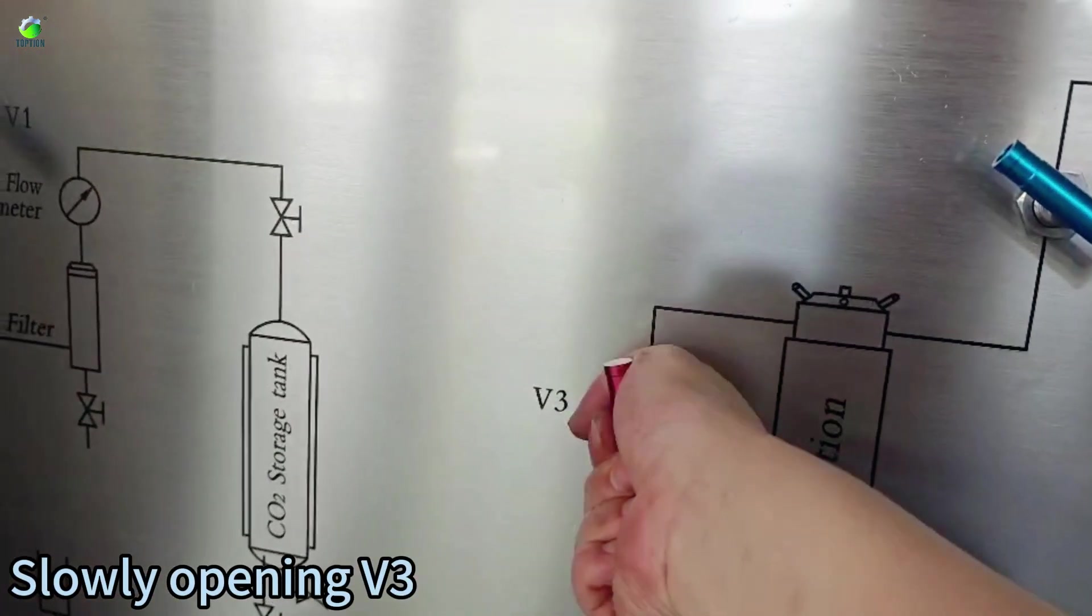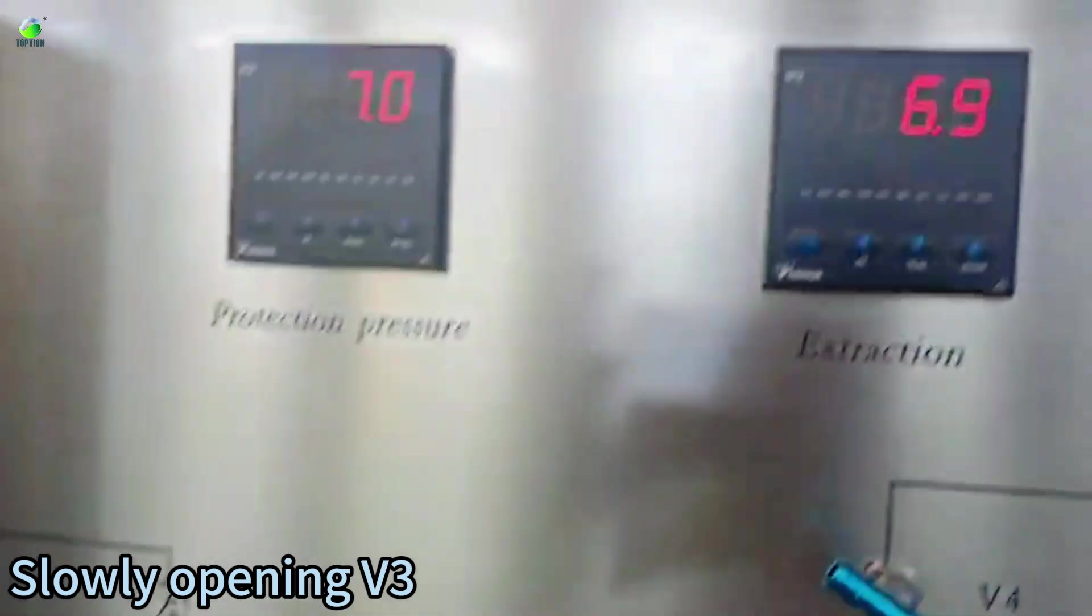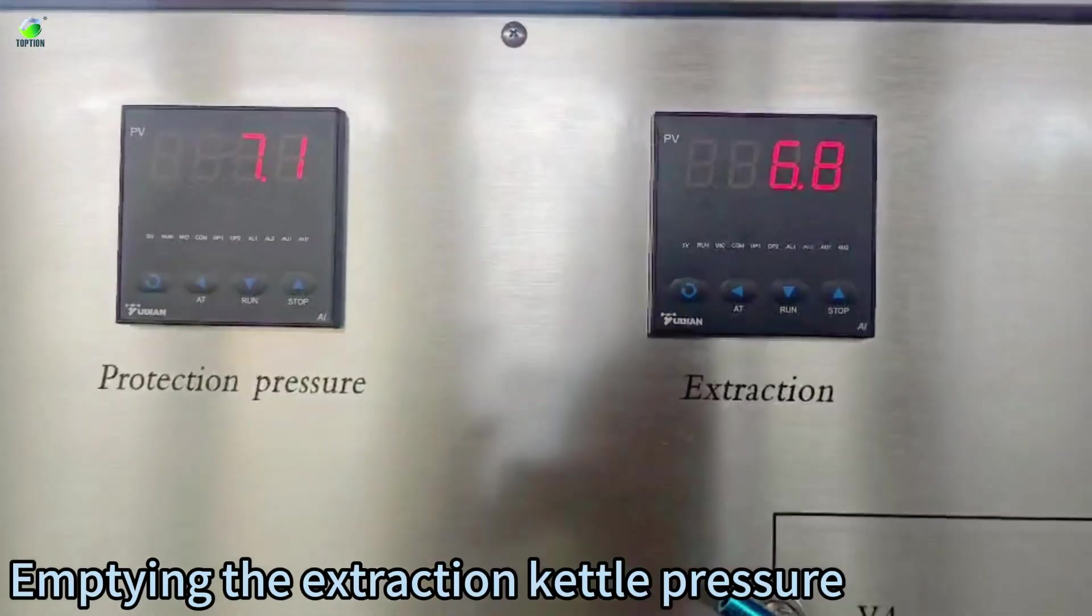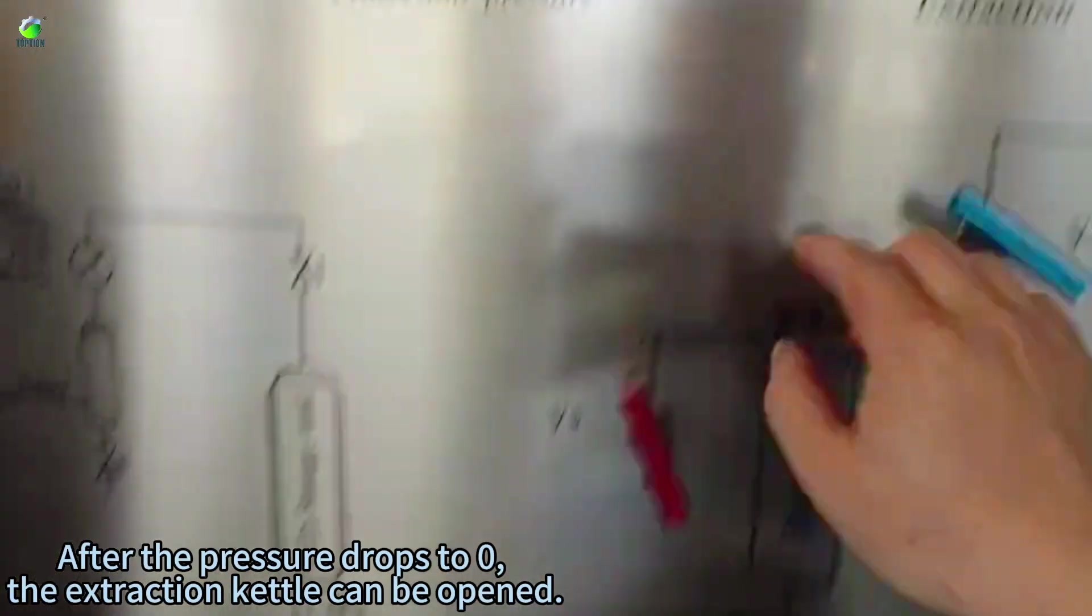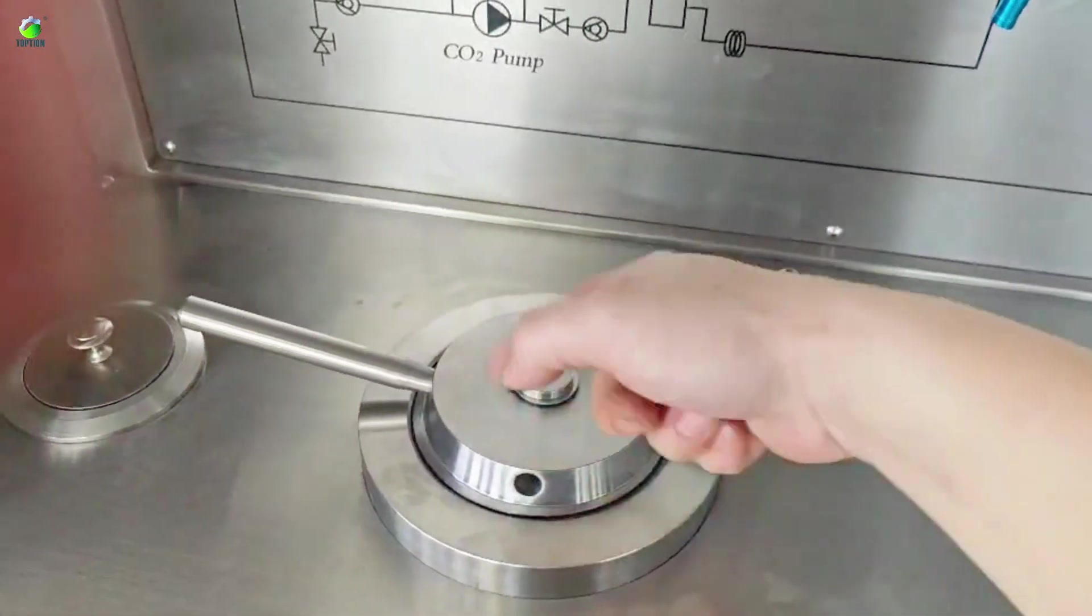Slowly opening V3. Emptying the extraction kettle pressure. After the pressure drops to zero, the extraction kettle can be opened.